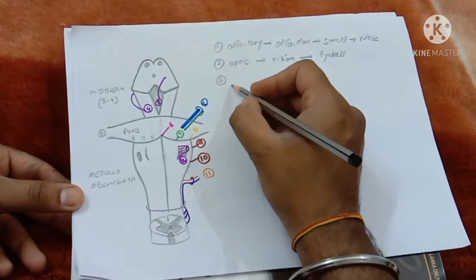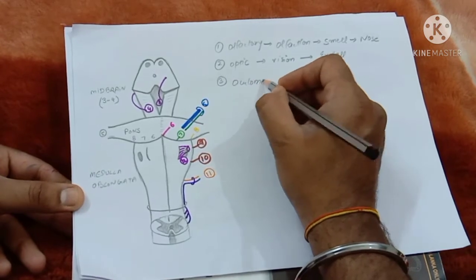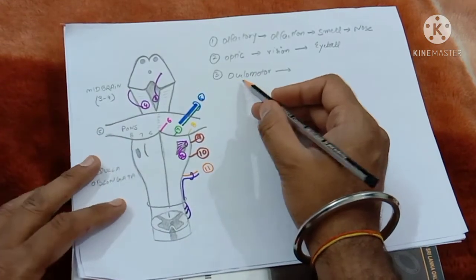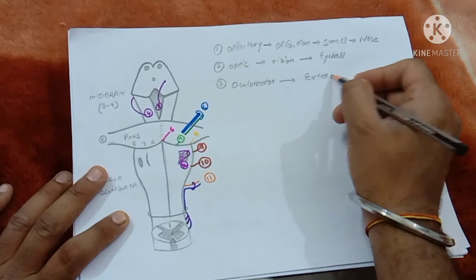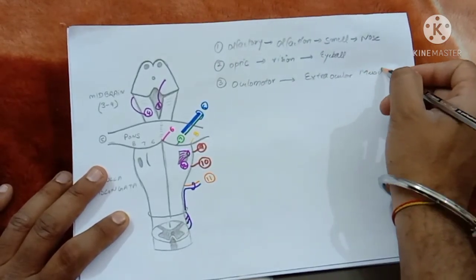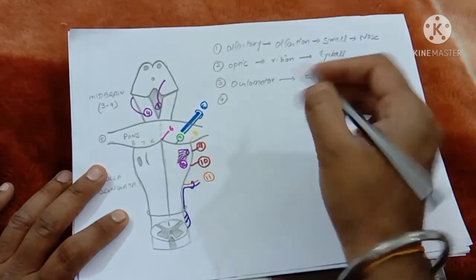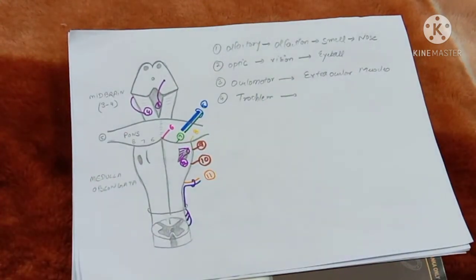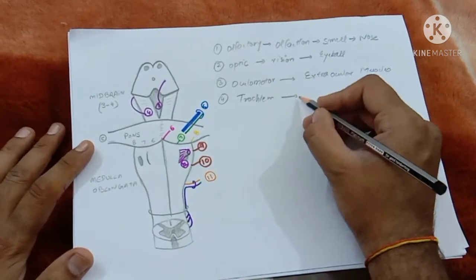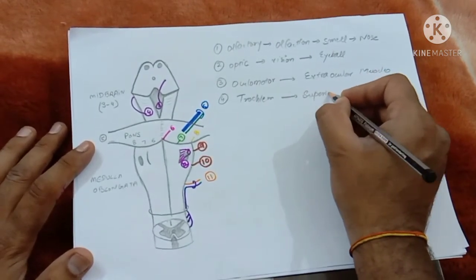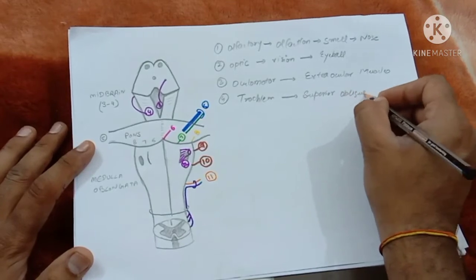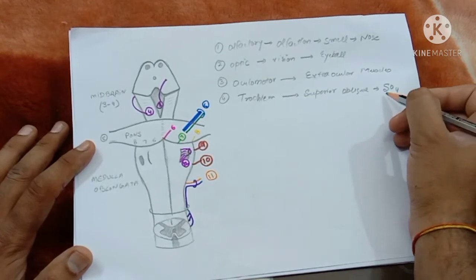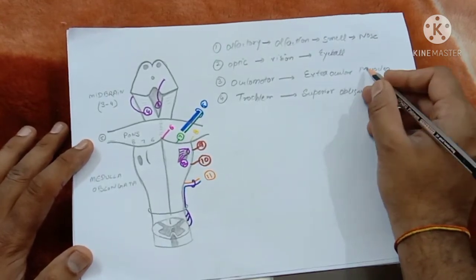The third nerve is called oculomotor. Motor means it has to supply muscles, and oculo means eyeball — it supplies the extra-ocular muscles. The fourth is called trochlear. It actually passes through the trochlear pulley in the orbit, which is why it is given the name trochlear. It supplies the superior oblique muscle. So SO4 means the fourth cranial nerve supplies the superior oblique muscle, which is an extra-ocular muscle.